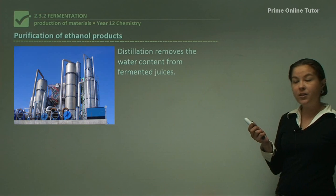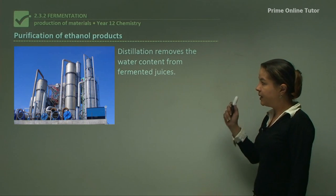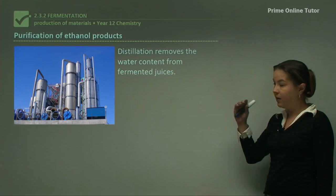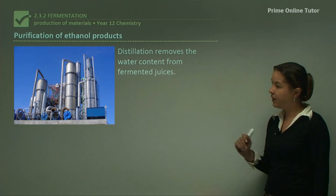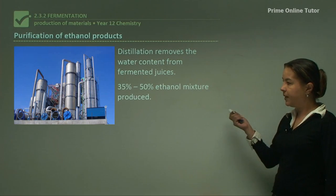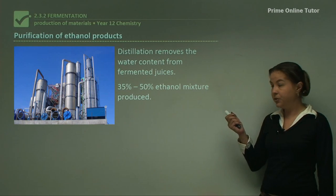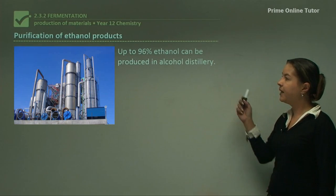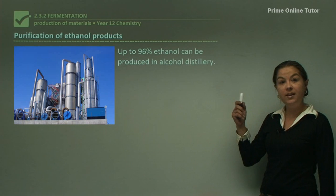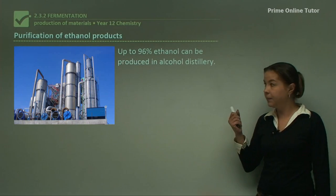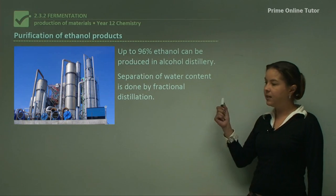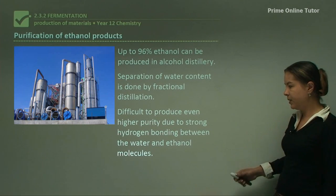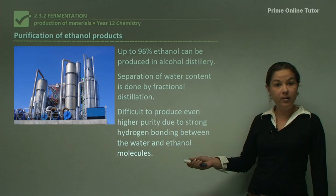Looking at the purification of ethanol products: distillation removes the water content from the fermented juices. By removing the water, you'll have a higher concentration of ethanol. You can get a 35 to 50% ethanol mixture from distillation, and by doing even more fractional distillation, you can get up to about 96% ethanol produced in an alcohol distillery. The separation of water is done by fractional distillation.